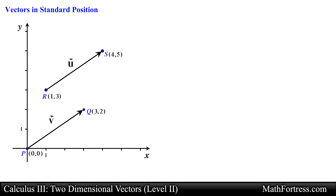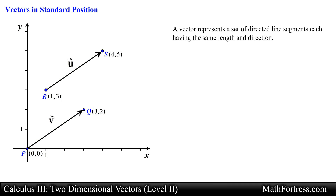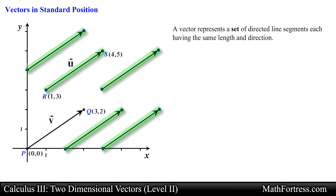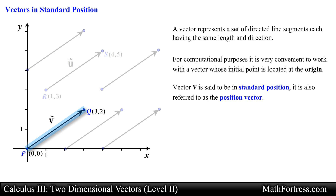The next concept is that a vector represents a set of directed line segments, each having the same length and direction. For example, vector v was equivalent to vector u even though their initial and terminal points had distinct coordinate points. We can represent additional vectors that are equivalent to vector v, all having the same direction and magnitude. For computational purposes, it is convenient to work with a vector whose initial point is at the origin — this representation is said to be in standard position, also referred to as the position vector.